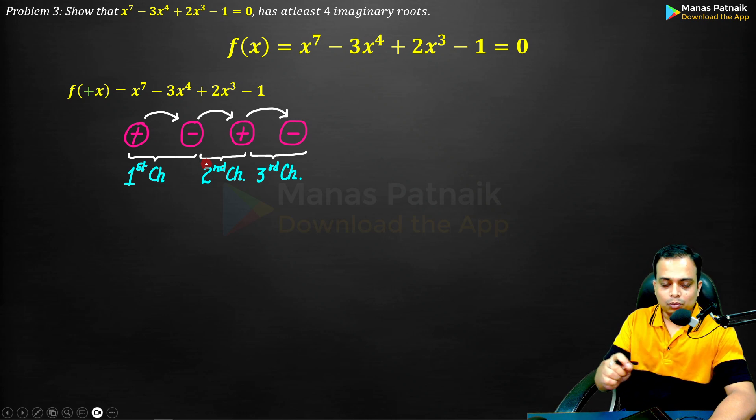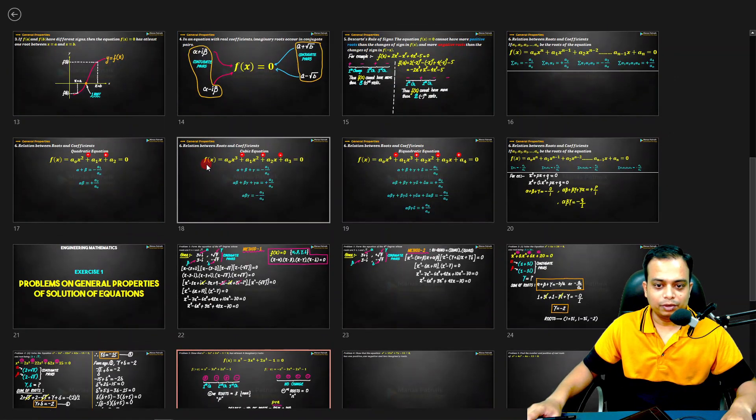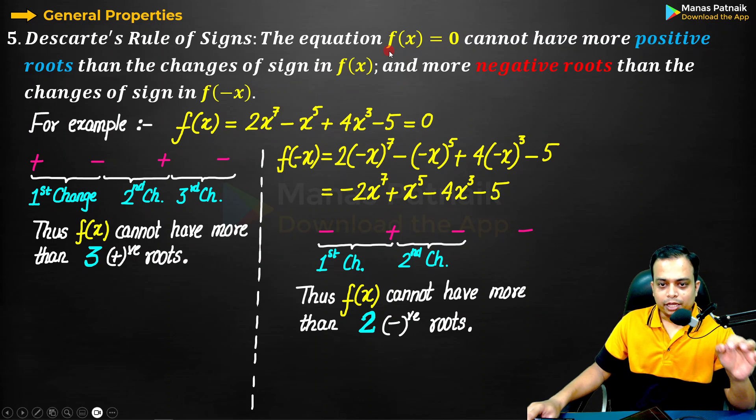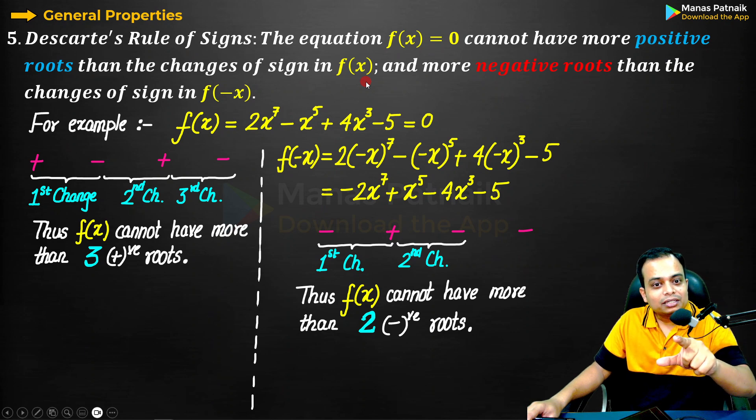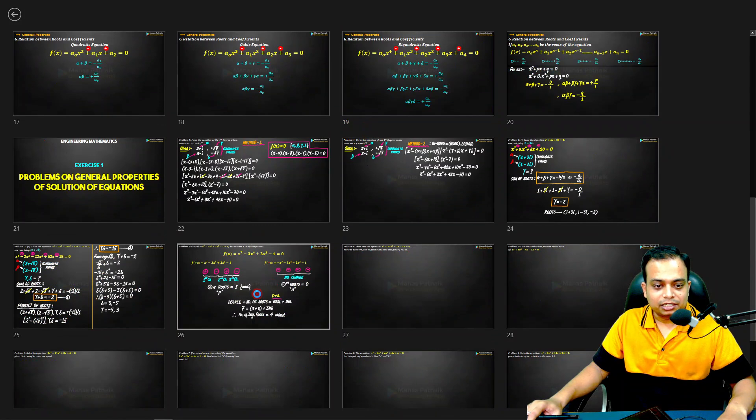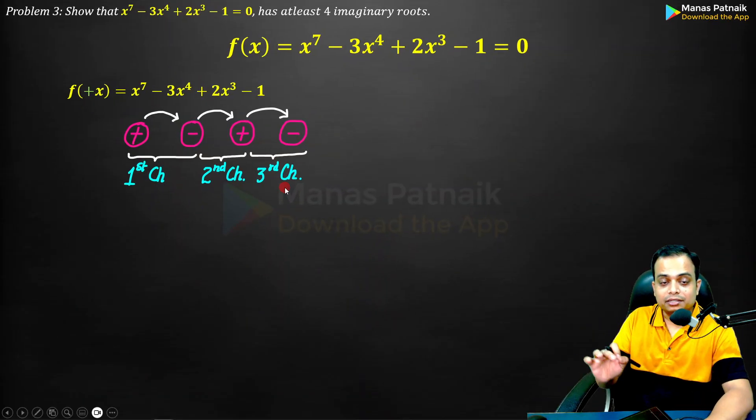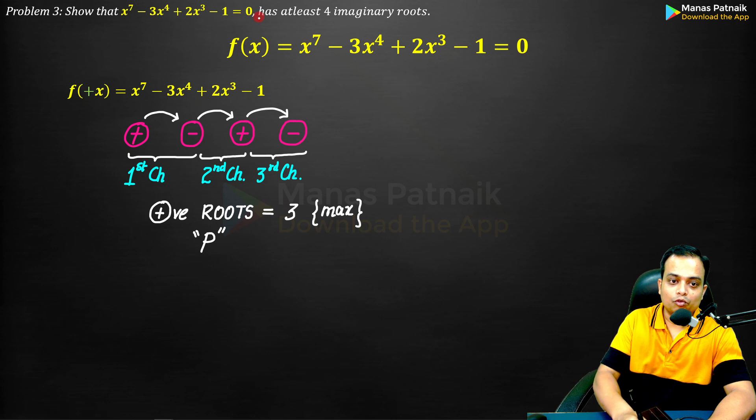The idea is to link this with the property, let me show you very quickly. The property says the equation f(x) = 0 cannot have more positive roots than the changes of sign. How many changes of sign did you observe? In f(+x) we encountered as many as three changes. This essentially means f(x) cannot have more than three positive roots.